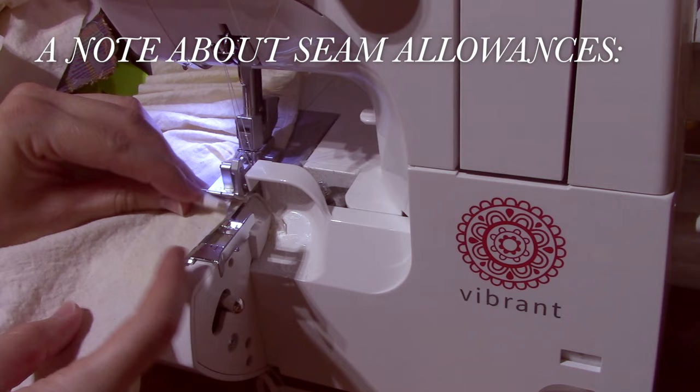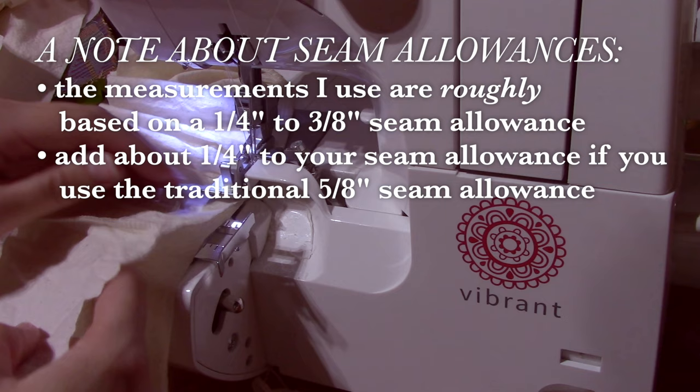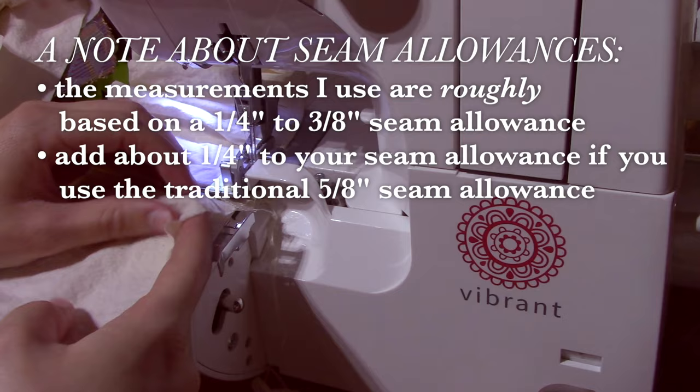Before you cut out your pieces, I want to note that the measurements I've given are all for a seam allowance that is about 3/8 of an inch because I use a serger to make these. If you're using the standard 5/8 inch seam allowance, you'll need to add about a quarter inch to your seam allowances. This doesn't apply to the top of the hip ruffles though, and I'll show you why in a bit.